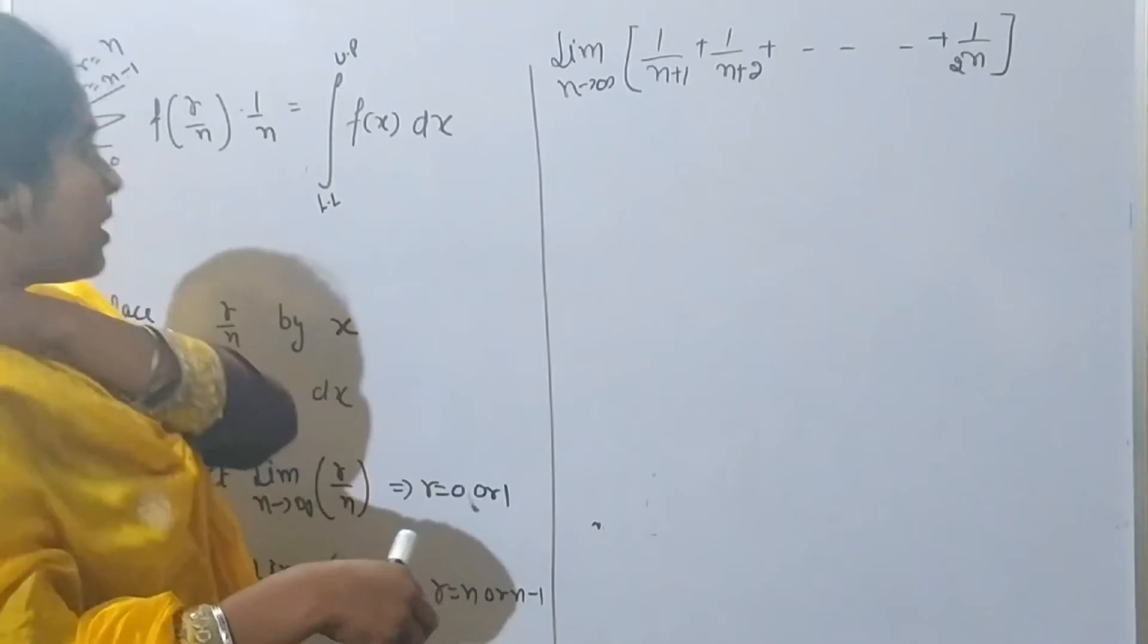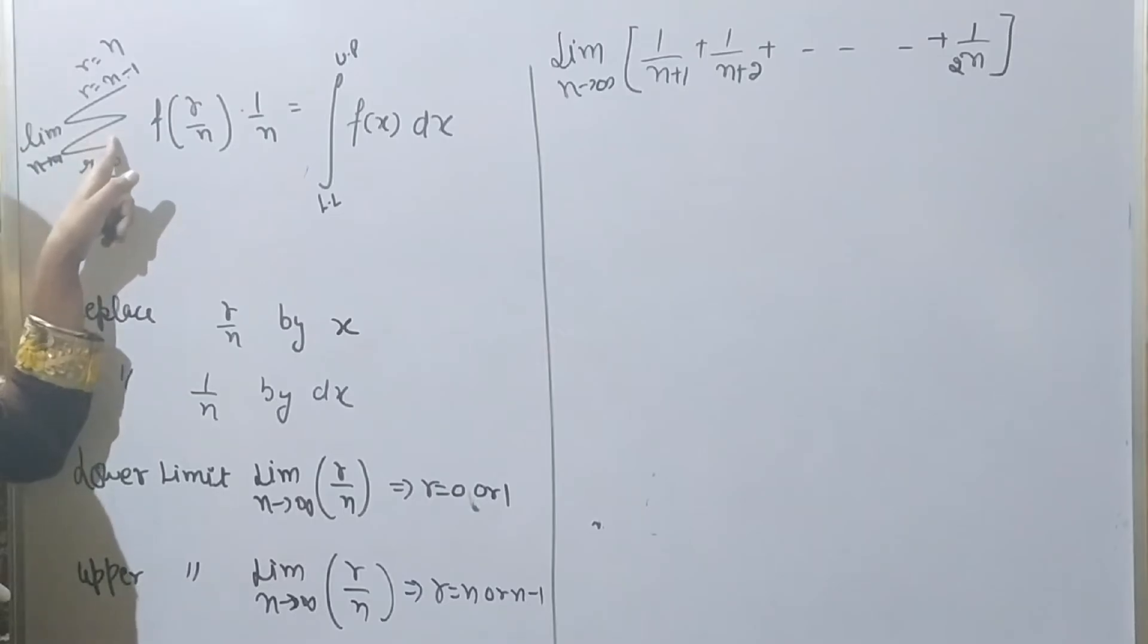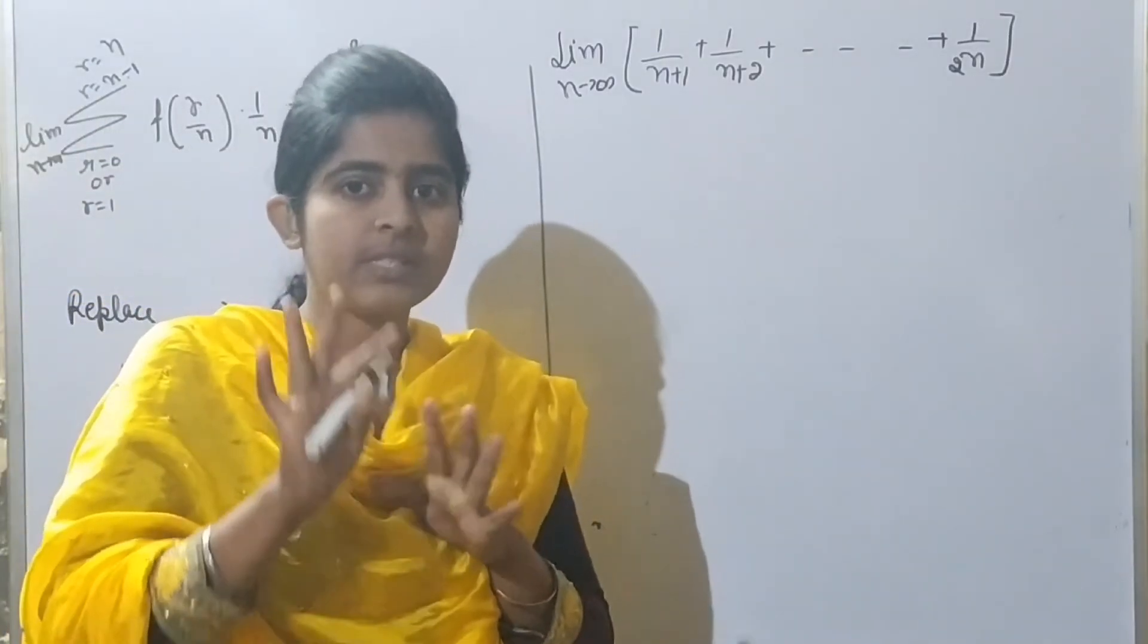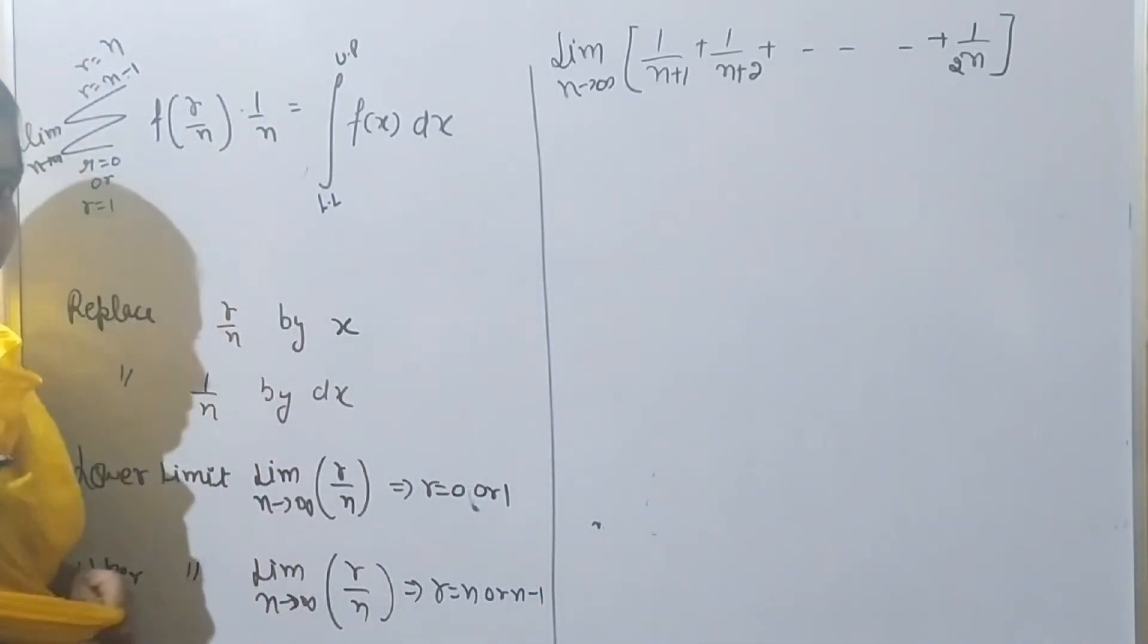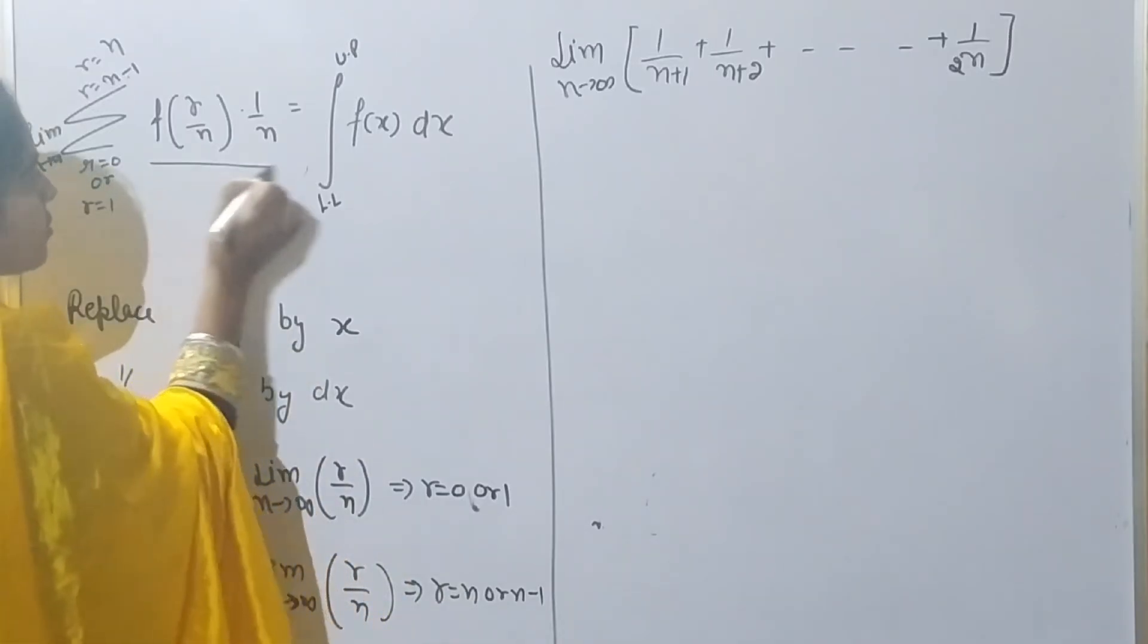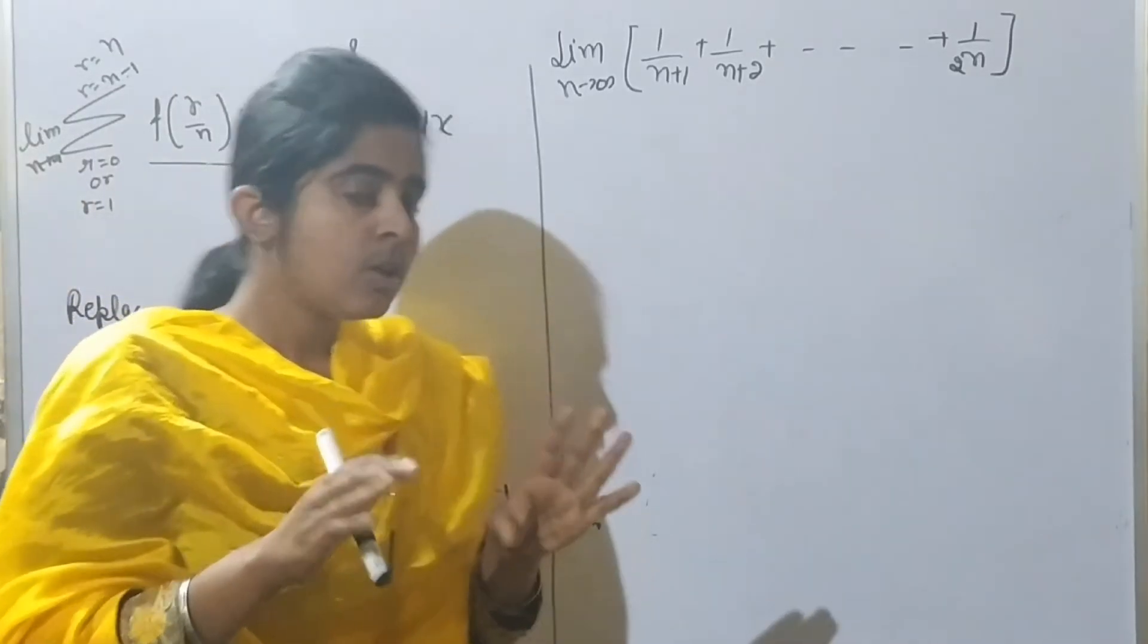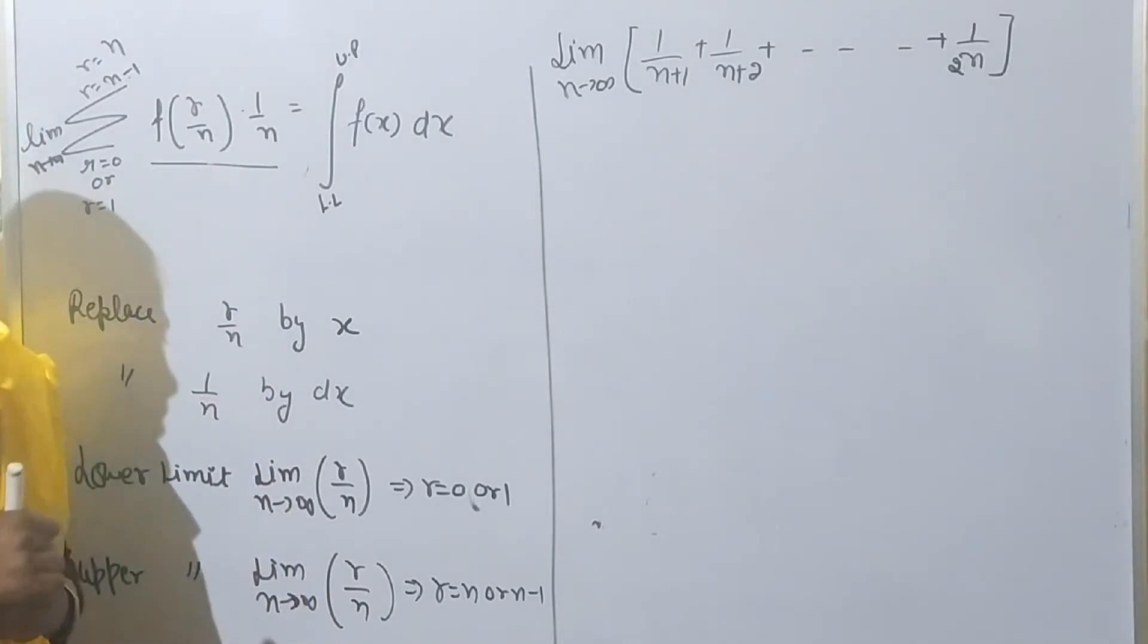An infinite series is written as limit n tends to infinity, summation from r=0 to n-1. This is the summation method with lower and upper limits. Let's see just three steps—it's very easy.